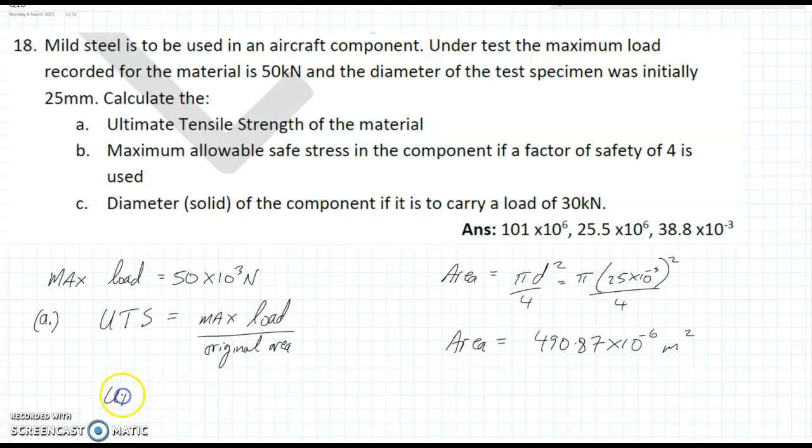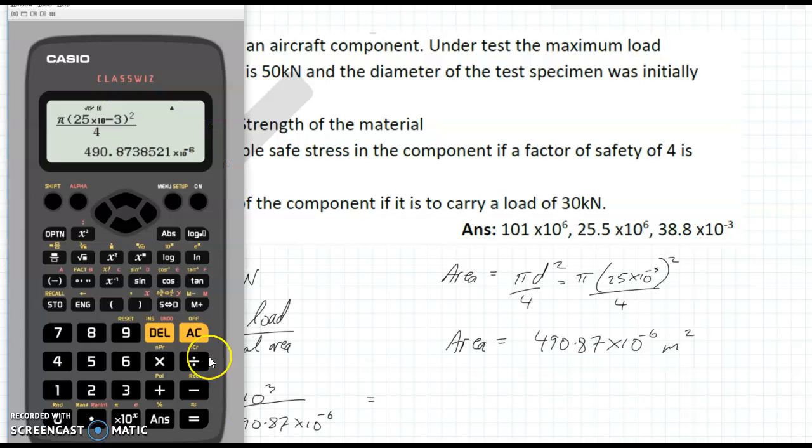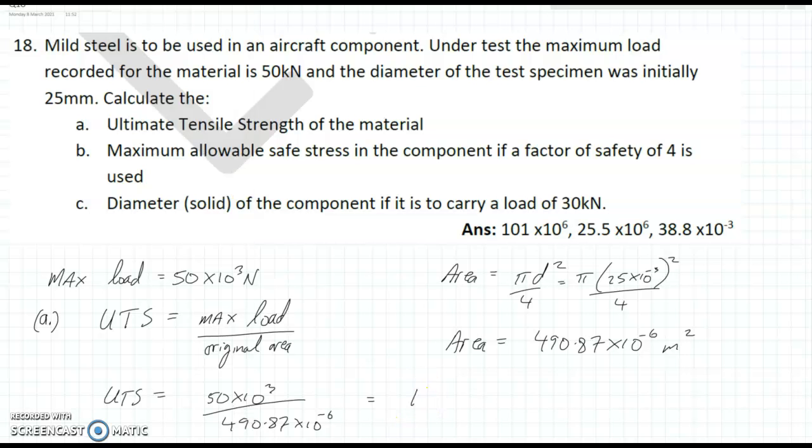So, the ultimate tensile strength will be equal to 50 by 10 to the 3 divided by 490.87 by 10 to the minus 6. So, back to the calculator. And, this time, we'll have 50,000 on top. And, below, we'll have our last answer, which was the area. And, that'll give us that big number there. We'll ng that. And, we get 101.9 by 10 to the 6. So, that's very close to the answer there given in the question.